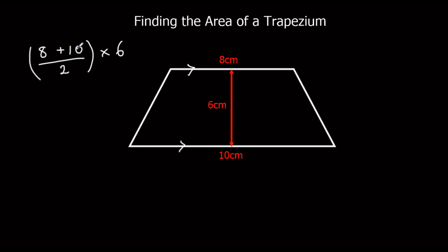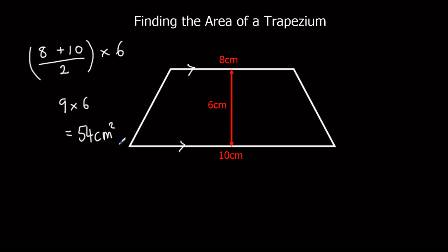Eight plus ten is eighteen, and half of eighteen is nine. So in this example, we do nine times six. Nine times six is fifty-four centimetres squared. Remember we measure area in squares.